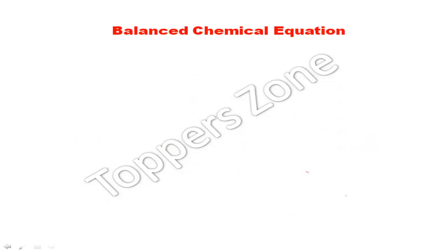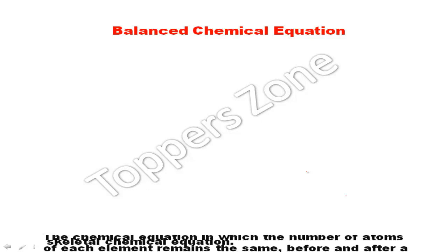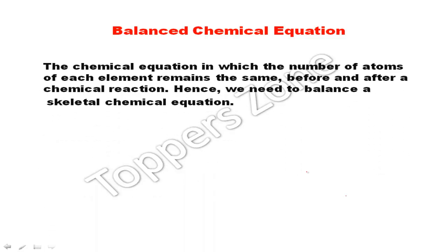Next, we have to balance a chemical equation. A balanced chemical equation is one in which the number of atoms of each element remains the same on both sides. This means the number of atoms on the left-hand side and the right-hand side should be equal. Let's balance one example.